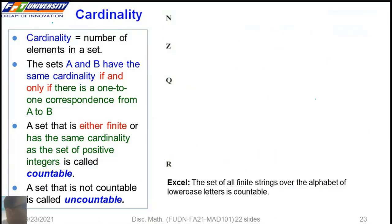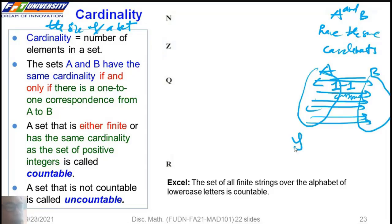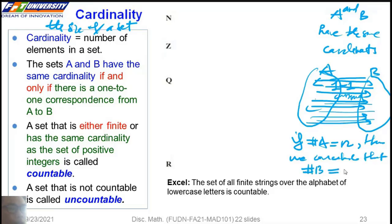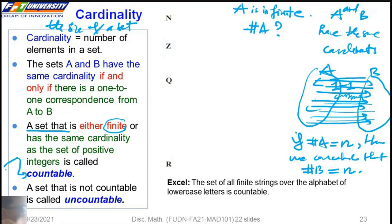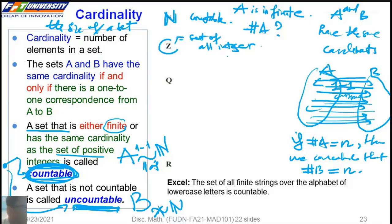Previously, we talked about cardinality. We say that A and B have the same cardinality if there is a one-to-one correspondence from A to B. If the cardinality of A is N, then the cardinality of B is also N. This is an important concept about the cardinality of a set. A set is either finite or infinite, giving us two kinds: countable sets and uncountable sets.